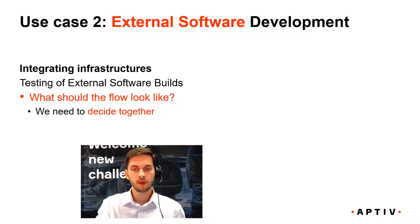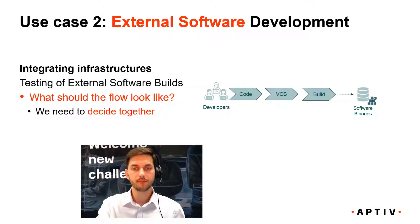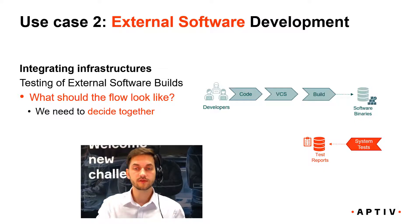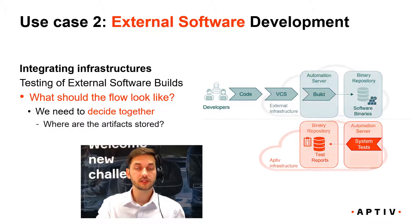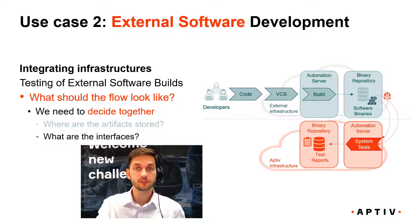Looking at the flow again: we have a group of developers, they write some code, commit it to a version control system, a build is started, and if the build is successful, the software binaries are uploaded to a repository. Then we trigger system tests that generate test reports. But we have to ask ourselves: where should the artifacts be stored — like the test reports and binaries? If the software binaries are stored in the external infrastructure, we as a system testing department need to know how to download the binaries, what interfaces to use, how to get a notification when a build finishes successfully, and how to provide feedback back to the developers.